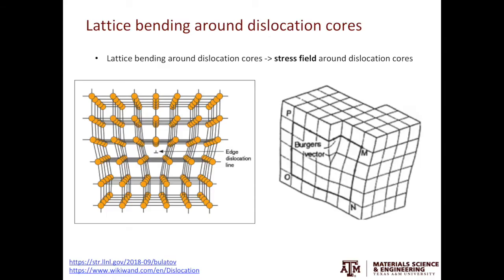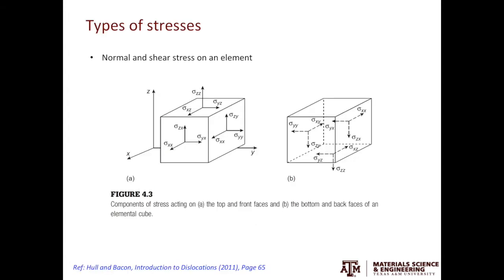From the last video, you learned that the lattice planes around the dislocation cores are bent. This is true for both screw and edge dislocations. Because locally these lattice planes are bent, there are stress fields associated with them. Before looking at the details of the stress fields around dislocation cores, let's use one slide to quickly go through what kind of stresses an element can experience.